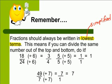This means if you can divide the same number out of the top and the bottom, do it. That means if they have any common factors, you have to divide those out.